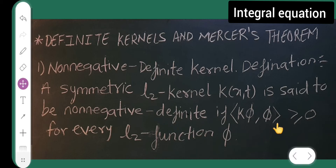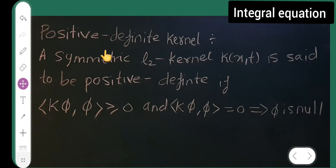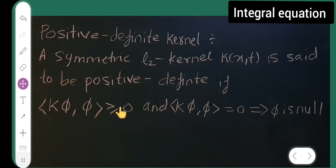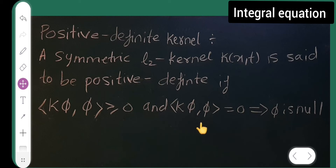Next is positive definite kernel. A symmetric L2 kernel k is said to be positive definite if the inner product of k·φ,φ is greater than or equal to 0, and the inner product of k·φ,φ equal to 0 implies φ is null.